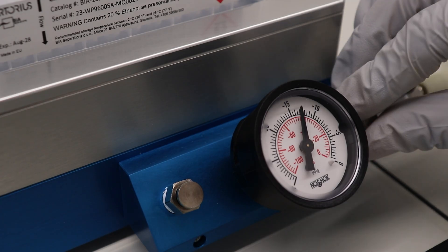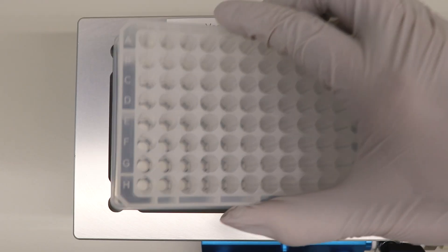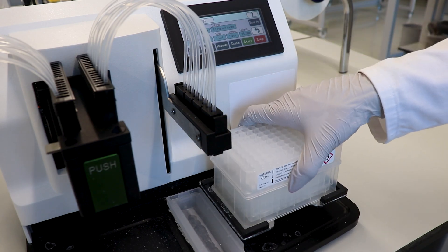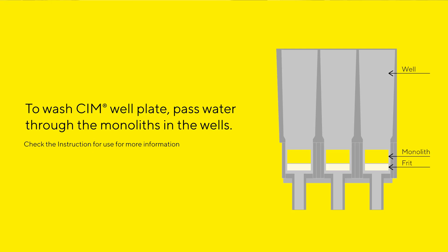We can operate plates with pressures of up to negative 0.6 bar. After removing all storage solution, we need to wash the well plate with water. For a complete wash, use at least 10 monolith volumes.